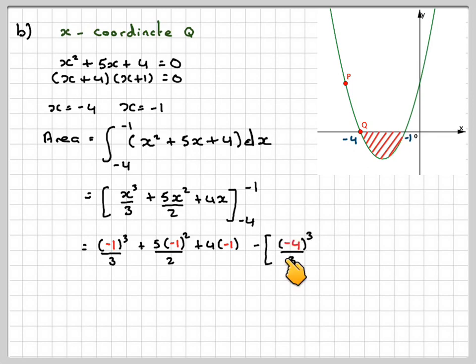Take away the whole thing. Minus 4 cubed over 3. We're now putting the lower limit in, plus 5 times minus 4 squared over 2 plus 4 times minus 4.